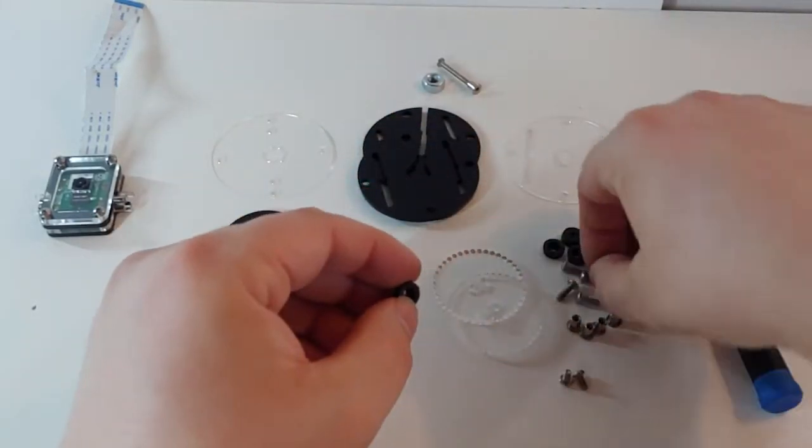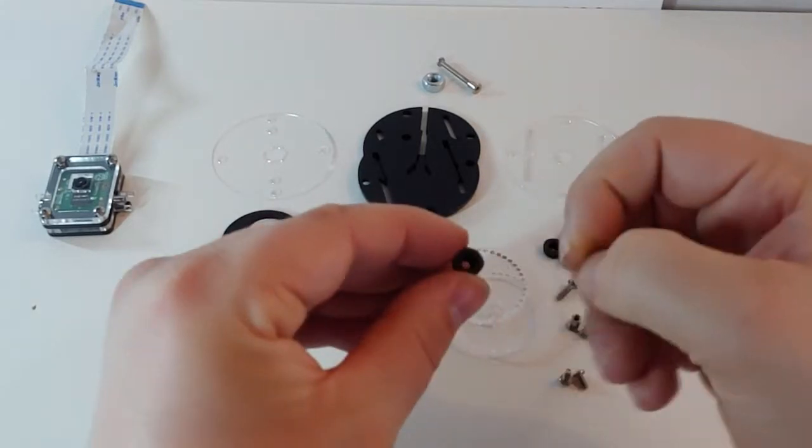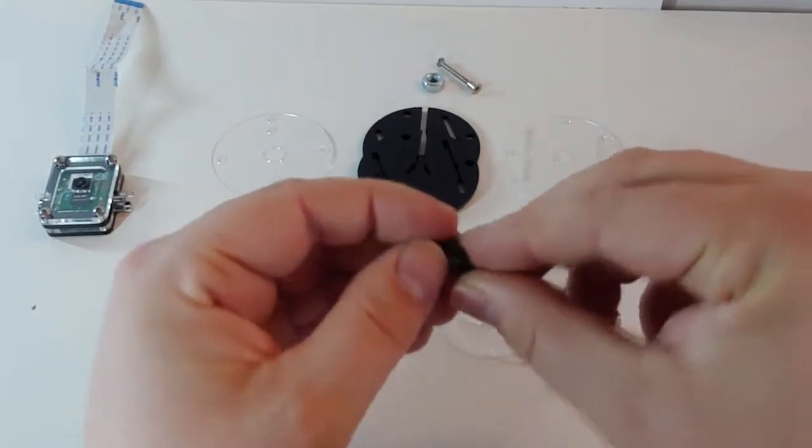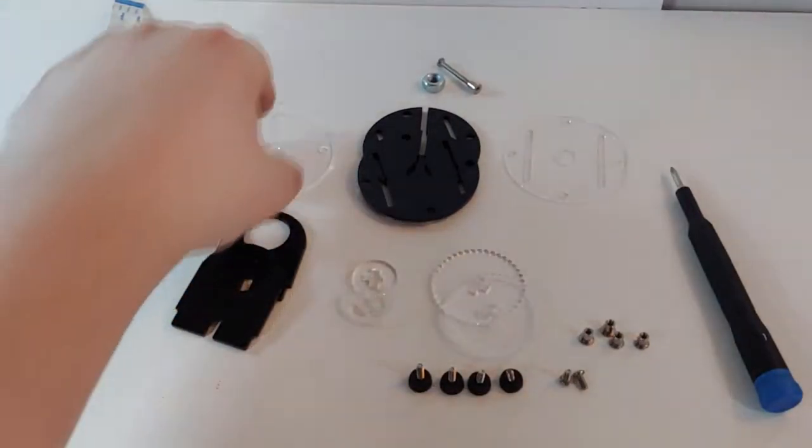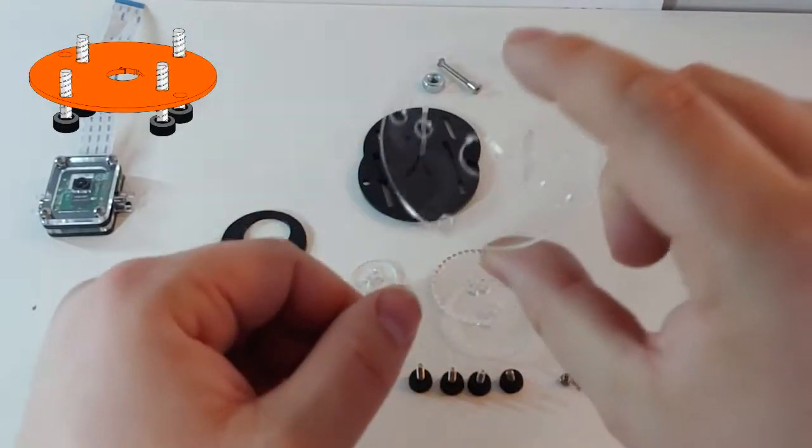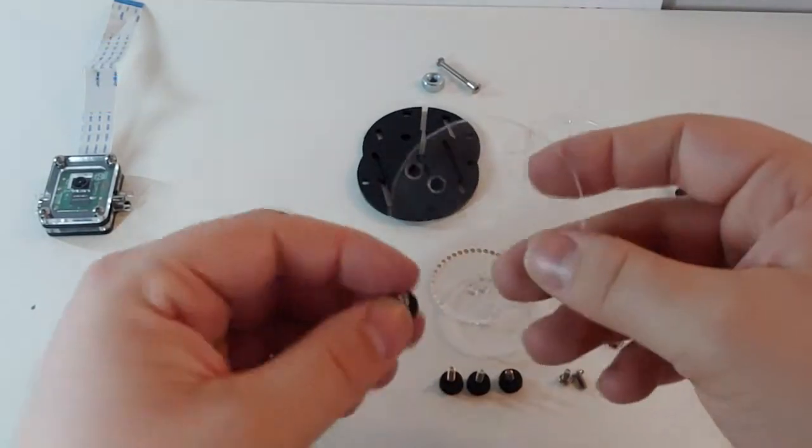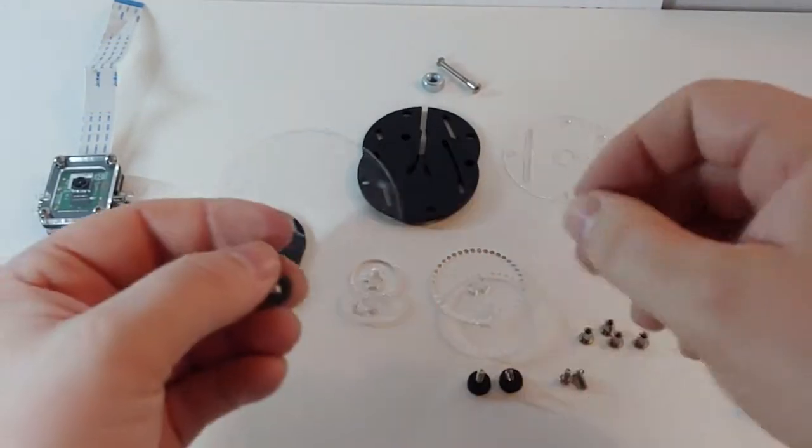To begin building the base, take the four three-eighths inch screws and insert them into the rubber feet. Next, taking the single holes of the base plate as reference for your top and bottom, insert the rubber feet into the top and bottom holes.